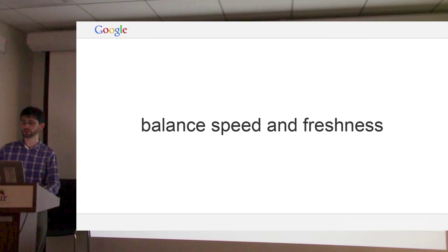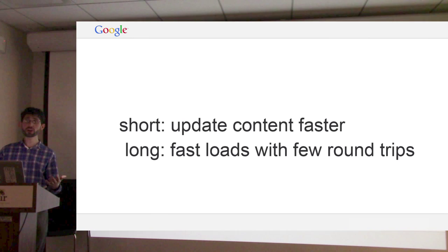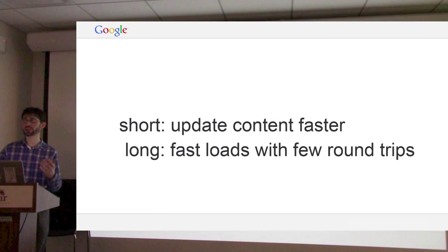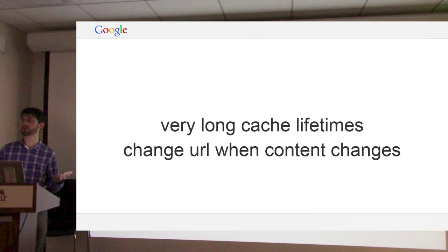There's a trade-off with cache control. With traditional cache control headers, you balance speed and freshness. If you have a short cache lifetime, you can push updated content really fast. Alternatively, if you have a long cache lifetime, pages load faster because browsers are more likely to already have the thing in cache and don't have to go fetch it. The solution is to use long caching combined with changing the URL whenever the content changes. Then we don't have this trade-off, because if we make a change server-side, we also change the URL.